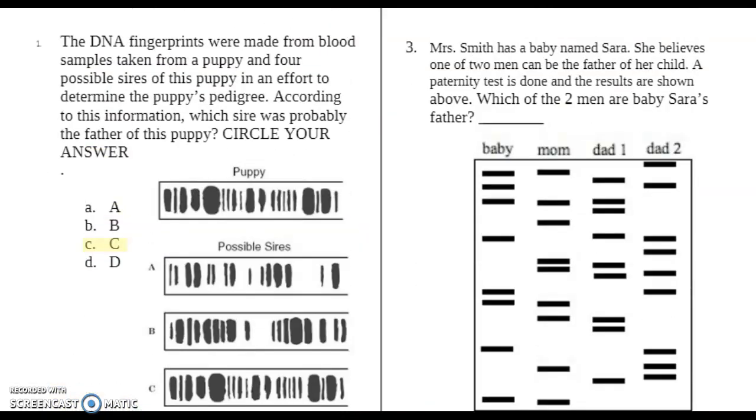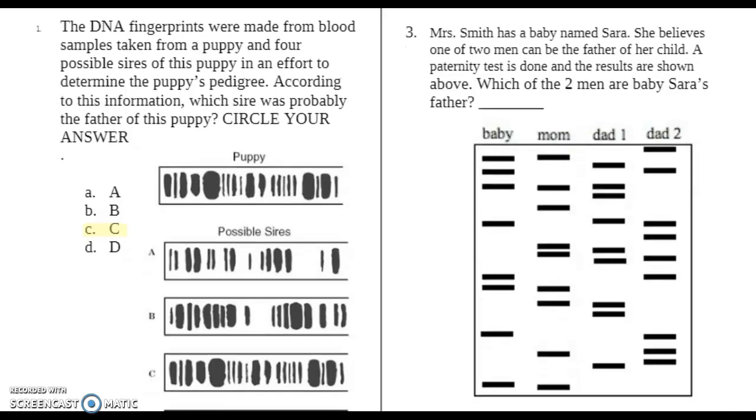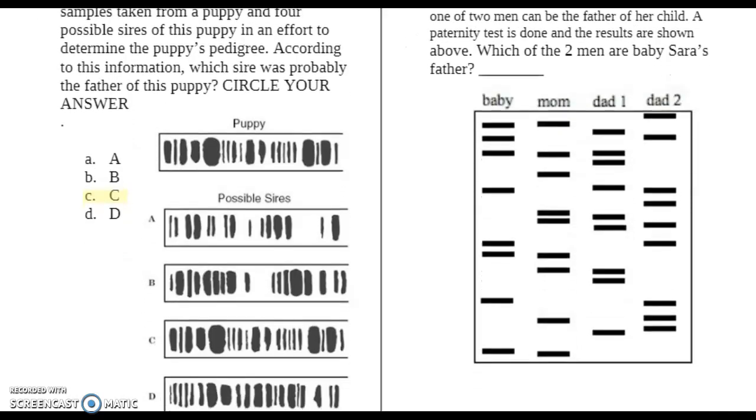Okay, number three up here says Mrs. Smith has a baby named Sarah. She believes one of two men could be the father of her child. A paternity test is done and the results are shown above. So which of the two men are Sarah's father?